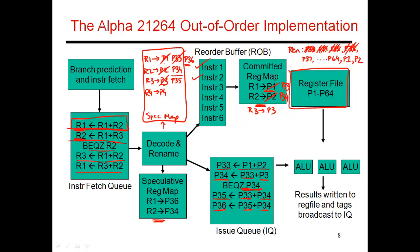Then the third instruction commits. Since it never used a rename register, it has nothing to do upon commit — it just commits and says it's done. And since the branch was predicted correctly, no instructions are squashed. Then instruction four commits, and it says that the value in P3 is no longer required, so that can be placed in the free pool. The value P35 is now the permanent home of R3.